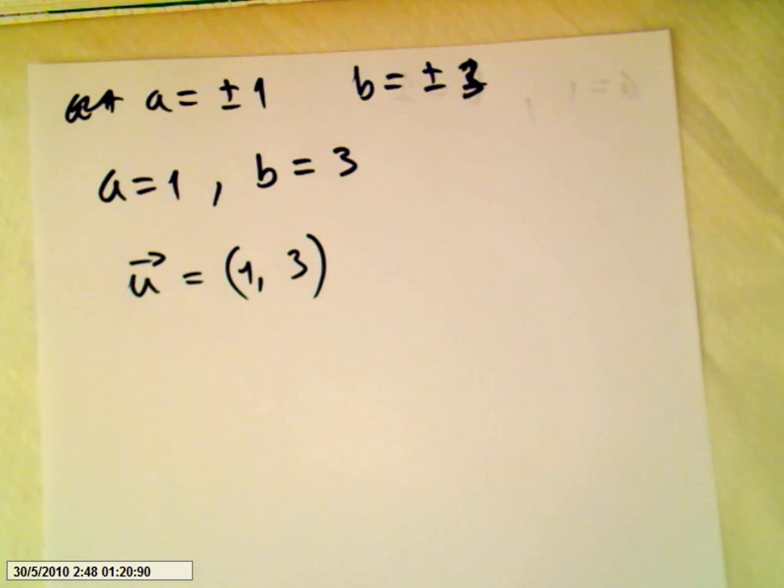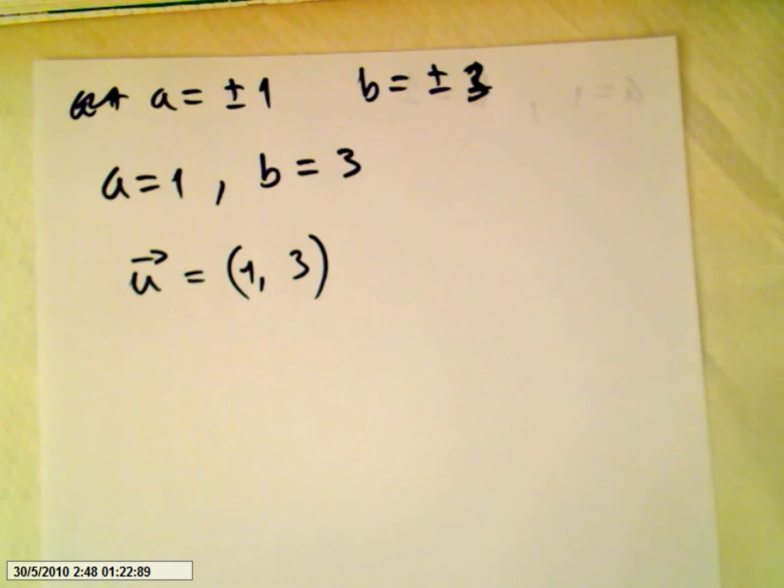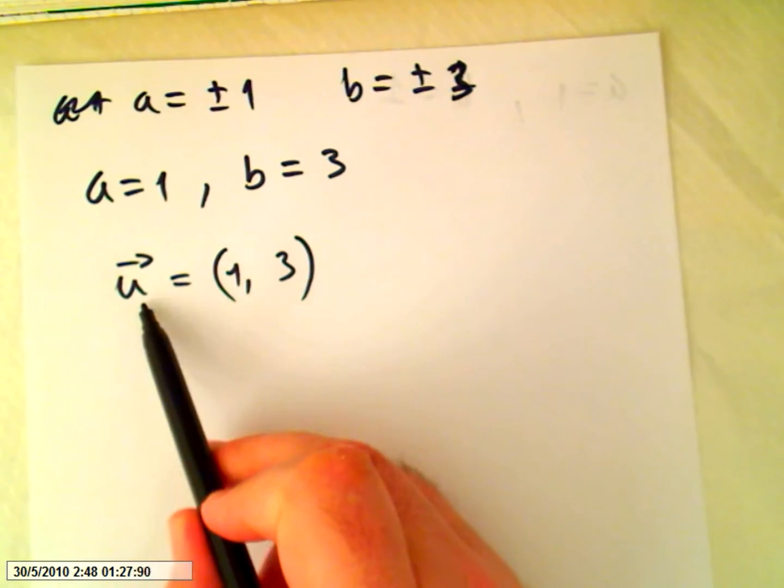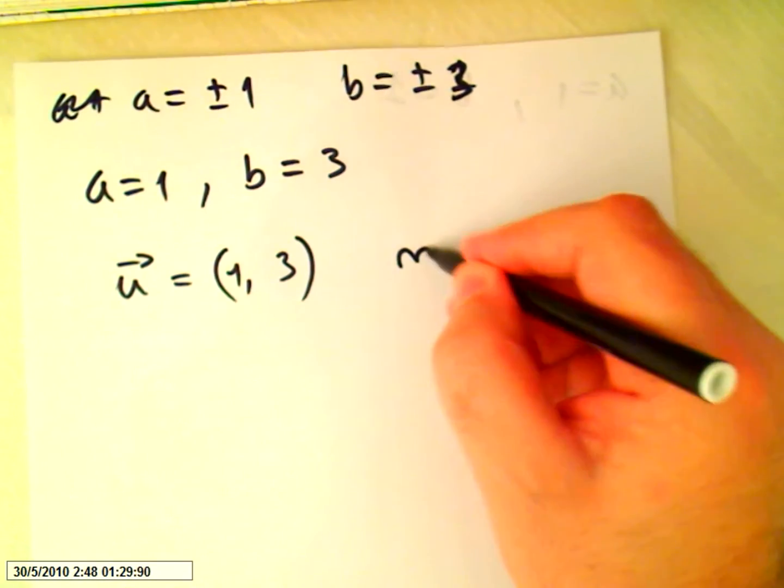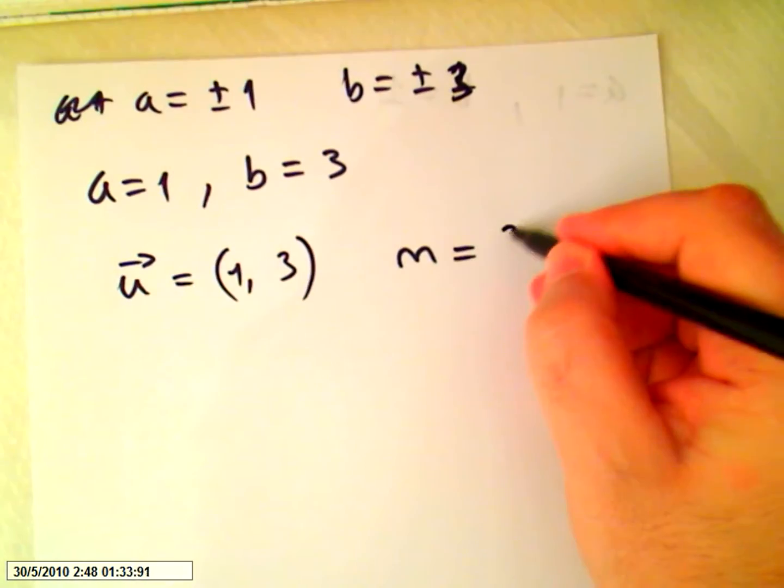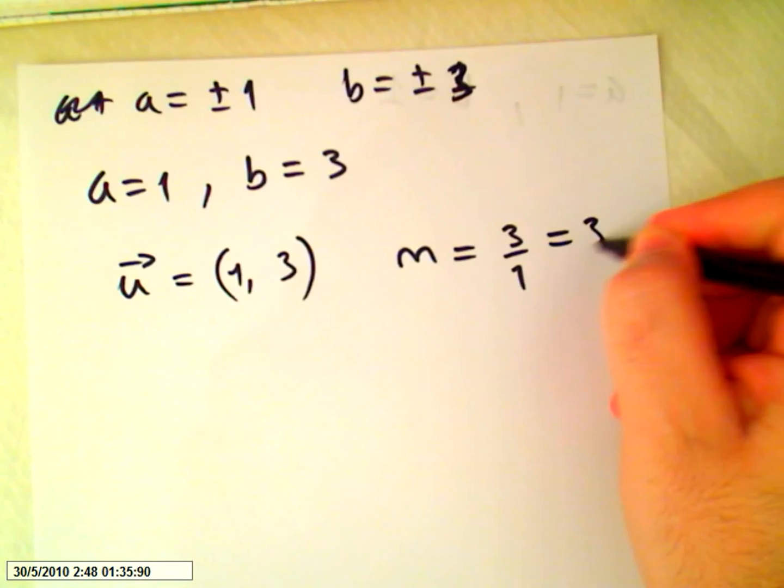So if the vector is 1, 3, the slope of the line will be this component over this one, 3 over 1, which is 3.